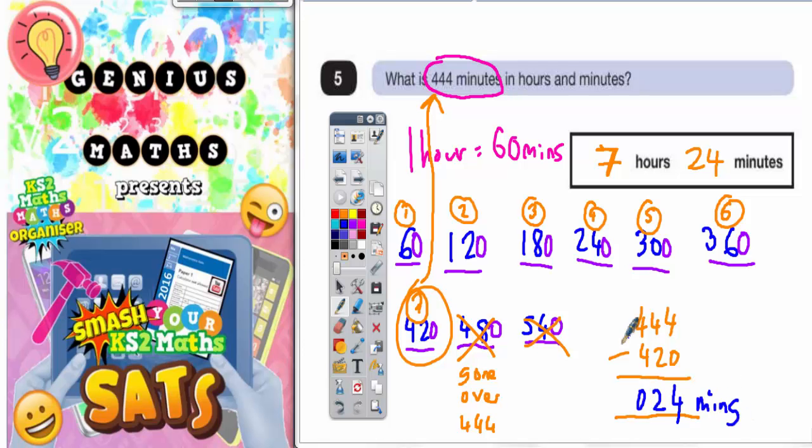So your final answer is that it's 1, 2, 3, 4, 5, 6, 7 full hours, which is 420 minutes, and there is an extra 24 minutes to get it up to 444 minutes. Final answer is 7 hours and 24 minutes.